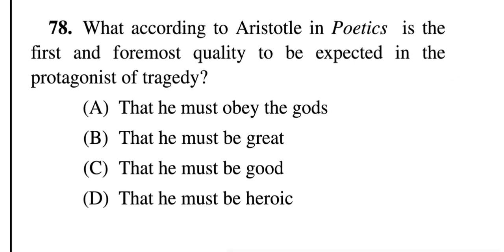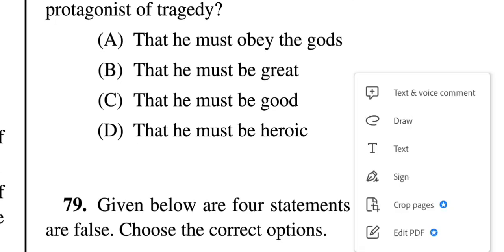Question 78: What, according to Aristotelian Poetics, is the first and foremost quality to be expected in the protagonists of tragedy? Options: A — That he must obey the gods, B — That he must be great, C — That he must be good, D — That he must be heroic. The correct answer is C — that he must be good.